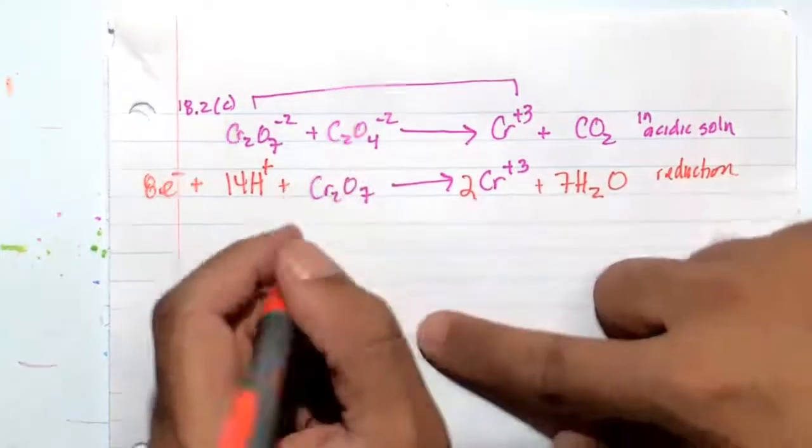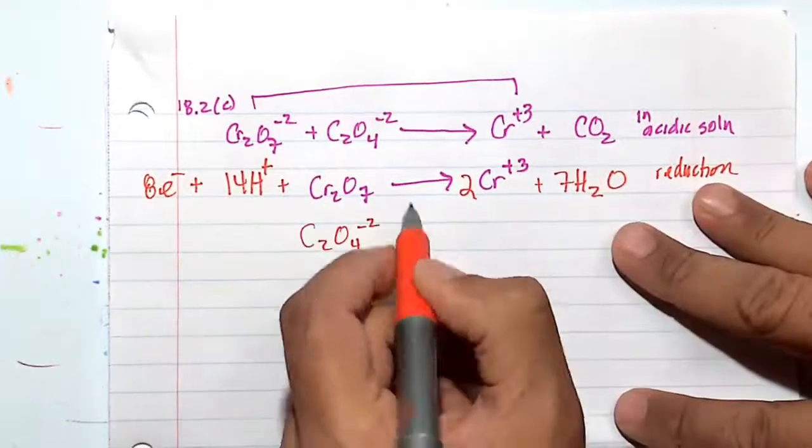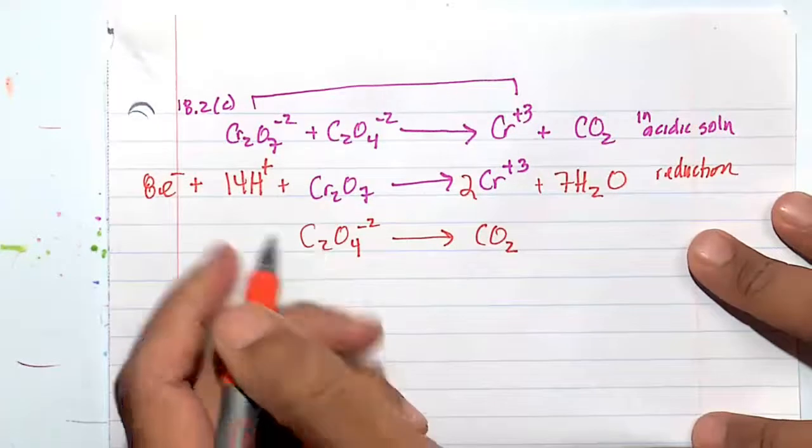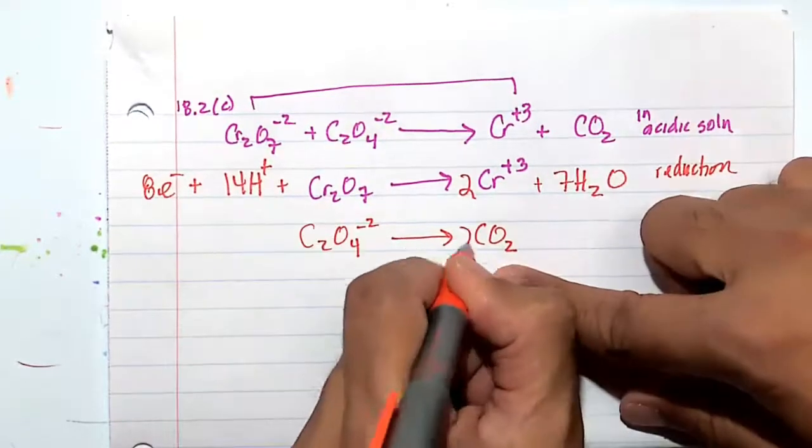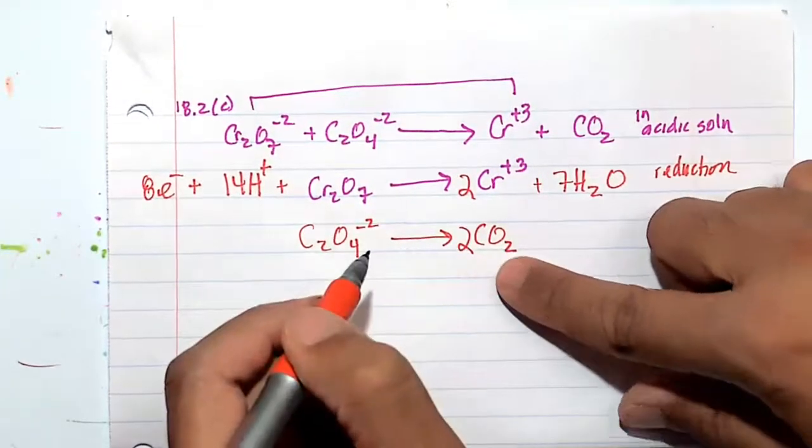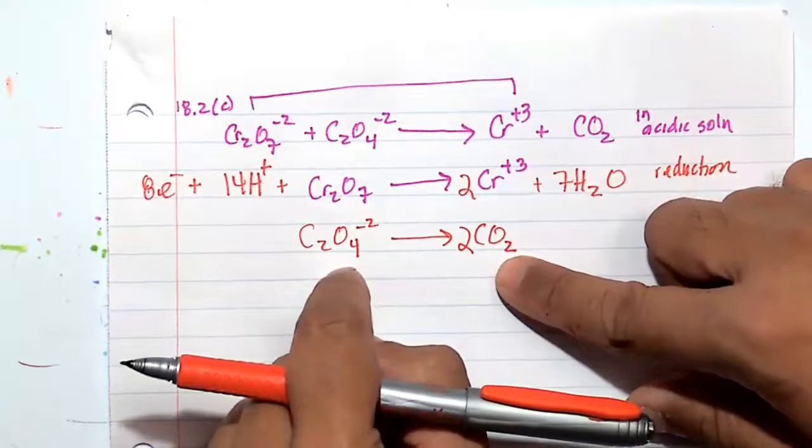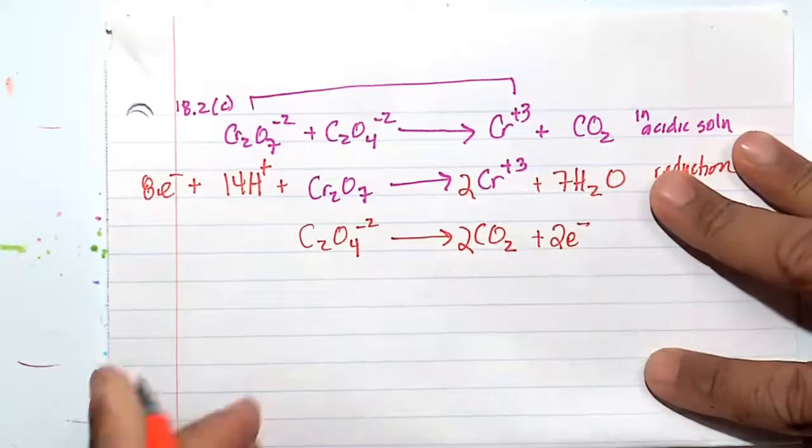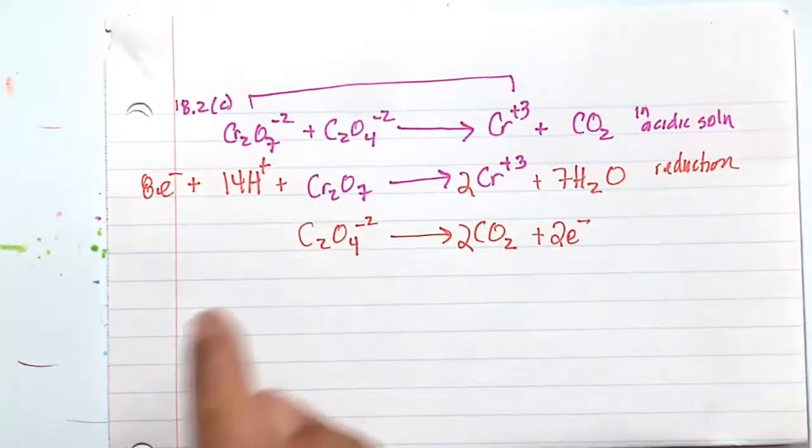All right, let's look at, I believe this is oxalate. 2O4 minus 2 goes to CO2. And let's balance out the carbons. So that's two carbons here. Four oxygens, so I'm balanced. The only thing I need is to just balance out the charges. And I can balance out the charges with two electrons.